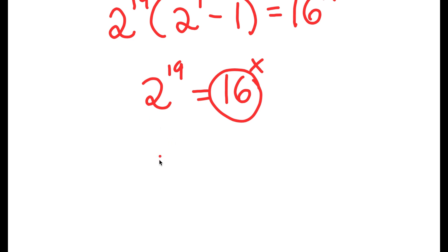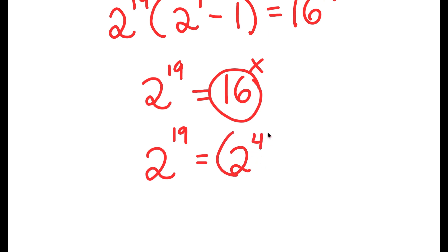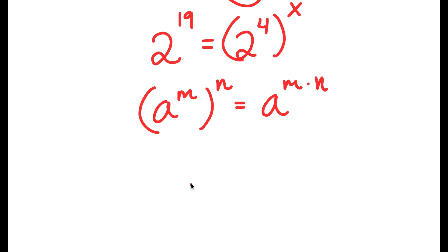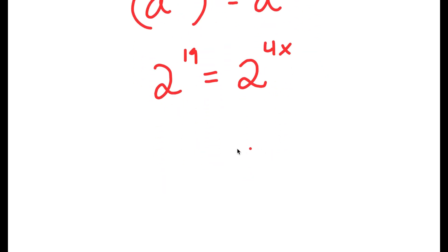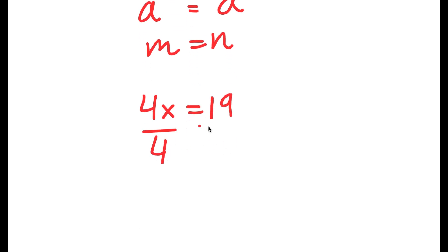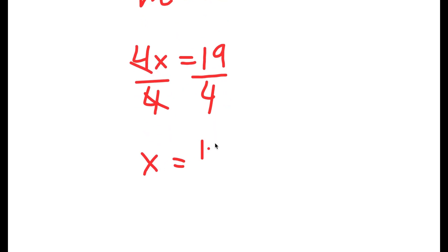Now, 16 is the same thing as 2 to the power of 4. So I have 2 to the power of 4 to the power of x on the right side. Using the rule that a to the power of m to the power of n equals a to the power of m times n, this becomes 2 to the power of 4x. Since a to the power of m equals a to the power of n means m equals n, I get 19 equals 4x. Dividing both sides by 4, x is equal to 19 over 4.